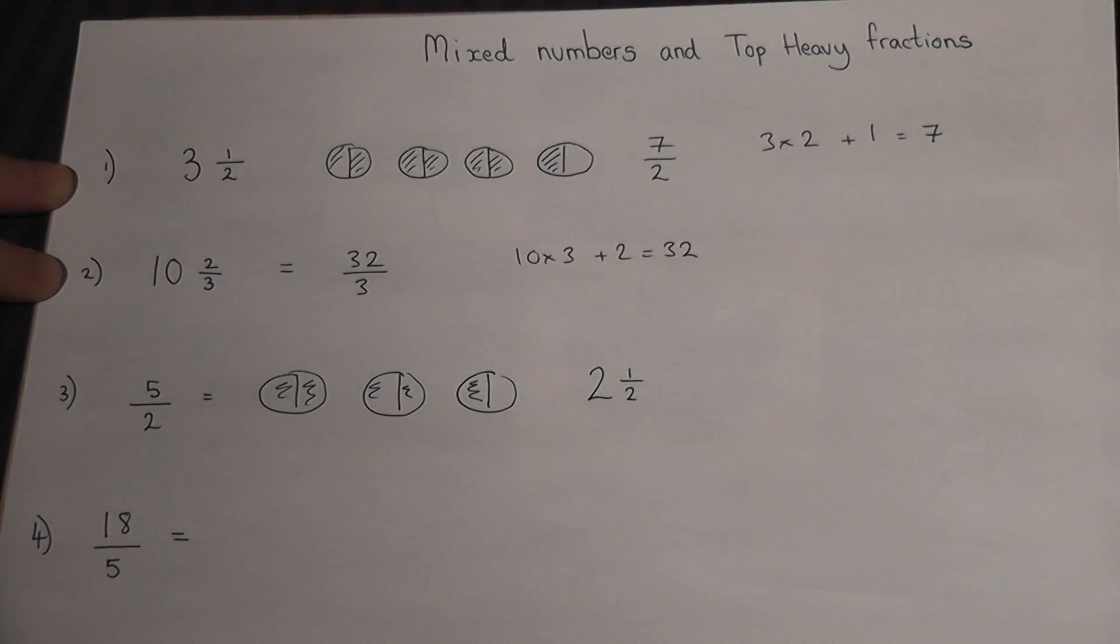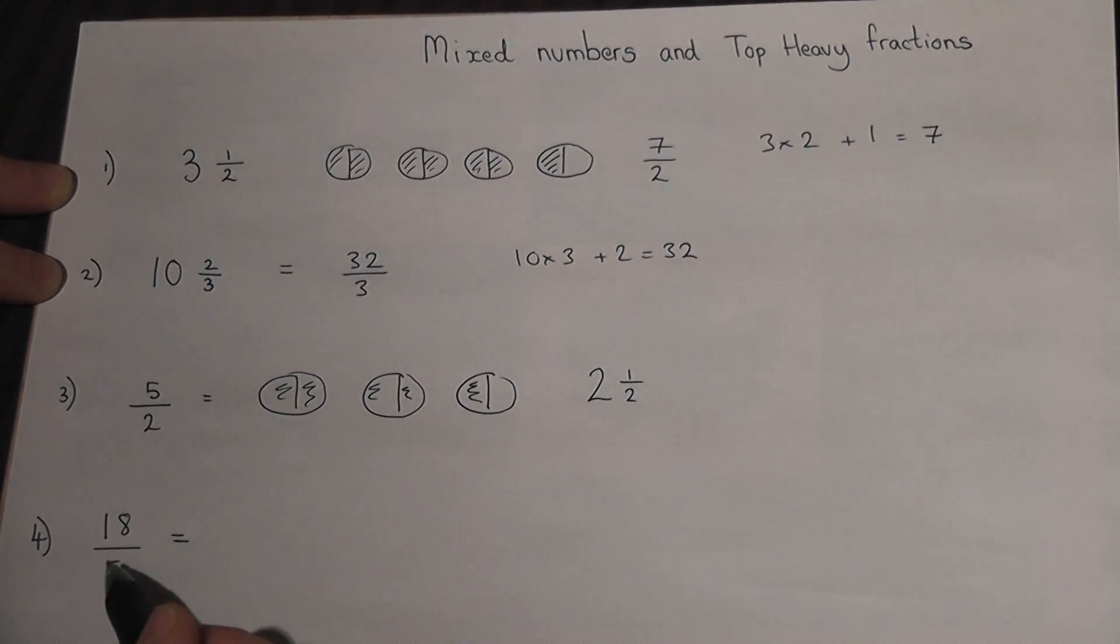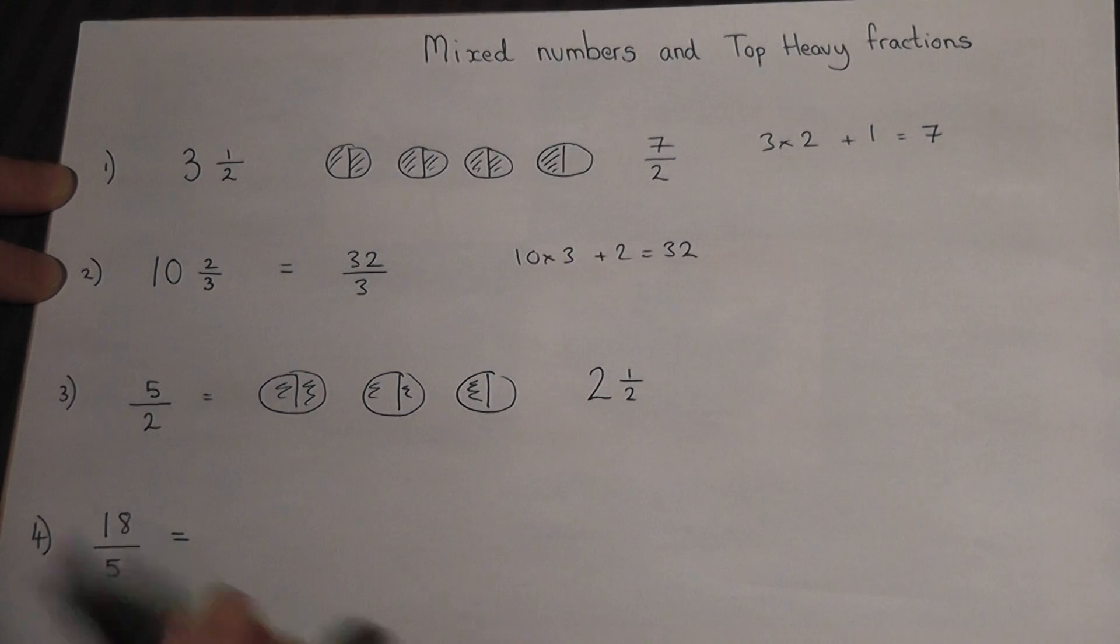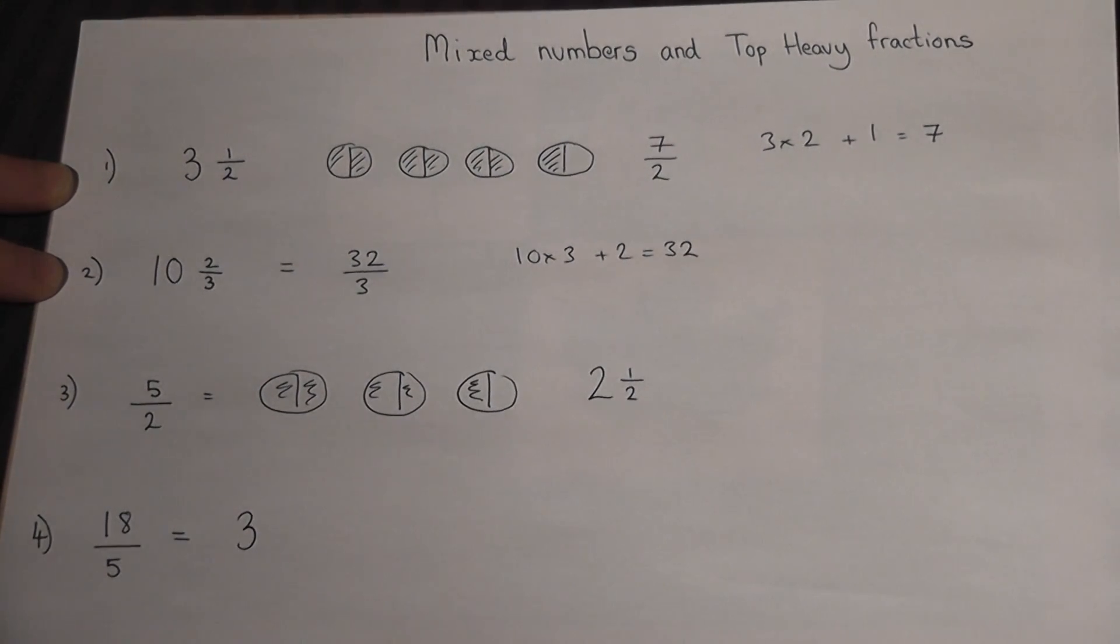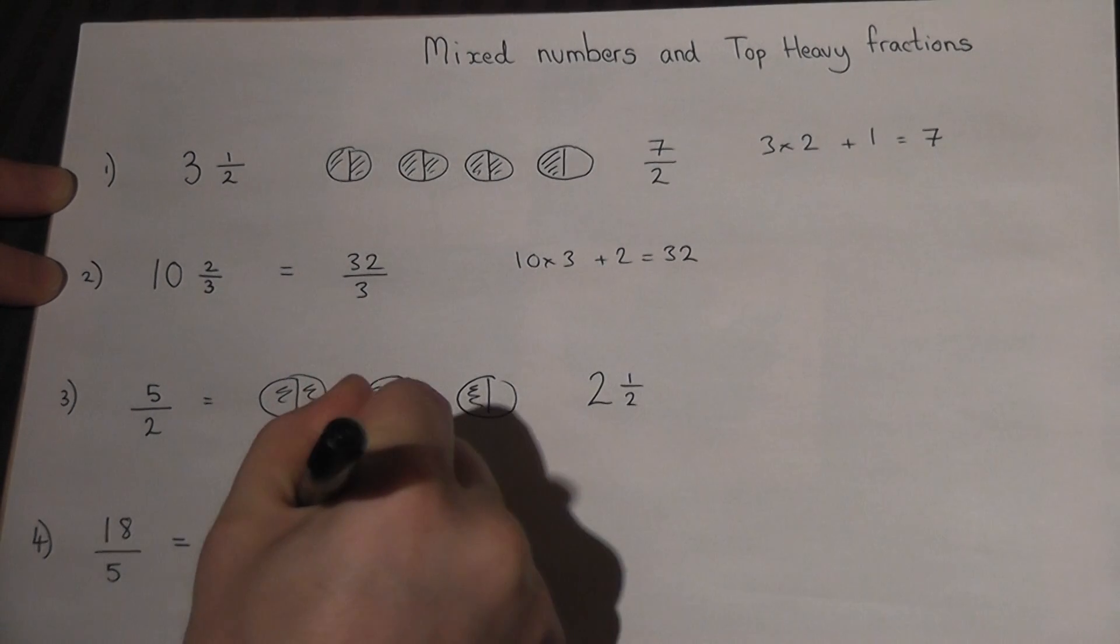So if asked to convert this fraction into a mixed number, the question is: how many fives are there in eighteen? Five, ten, fifteen - there are three fives in eighteen with a remainder of three. So it's three and three fifths.